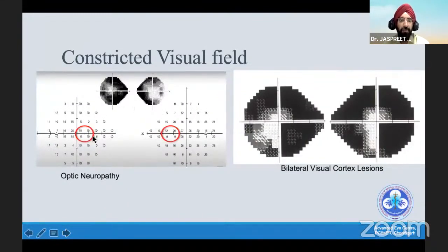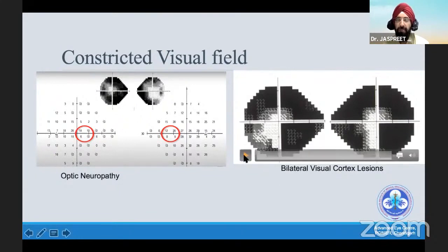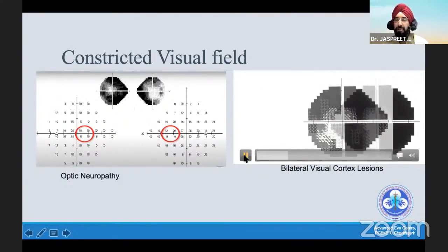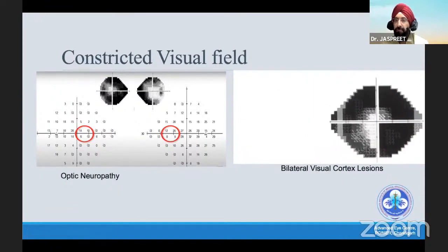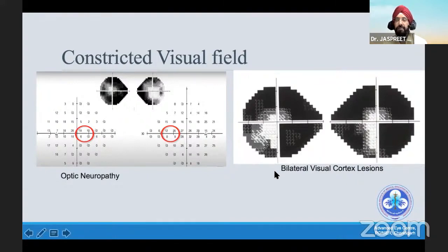Constricted visual fields were discussed and also seen in optic neuropathy, with a difference in threshold sensitivity in the nasal area evident on the deviation plot — basically a double arcuate scotoma going above and below. If you have a lesion in the bilateral visual cortex, a clue is that it's a bilateral homonymous hemianopia where the images are superimposable. The second clue is a difference in vertical threshold sensitivity — if you see a dark area on one side versus lighter on the other, that gives a clue that something is going on in the visual cortex.